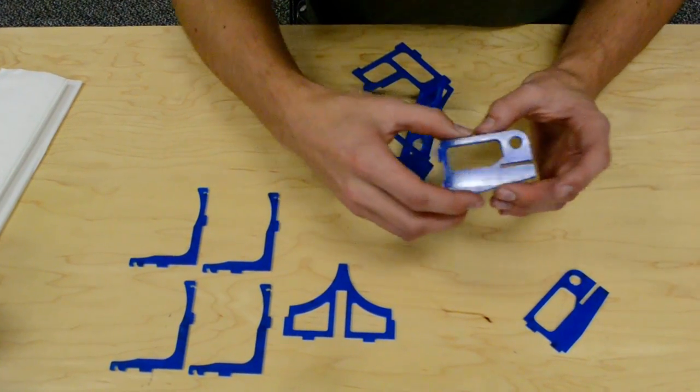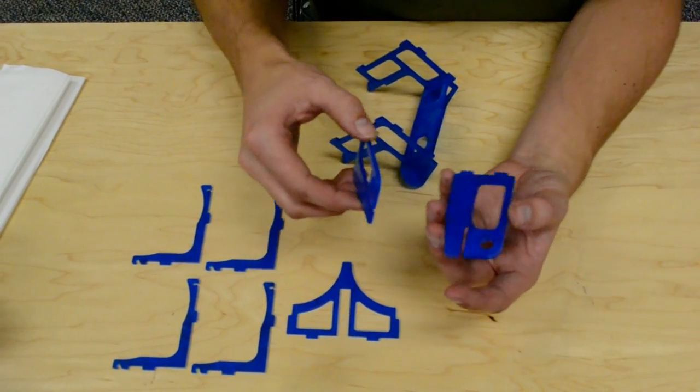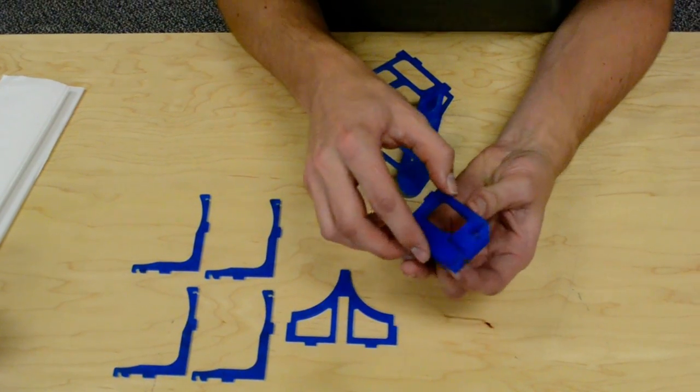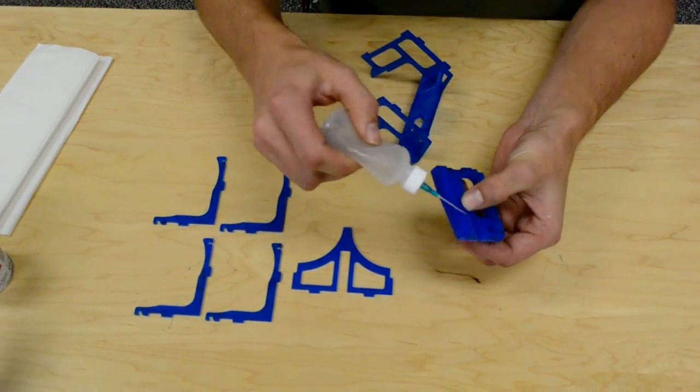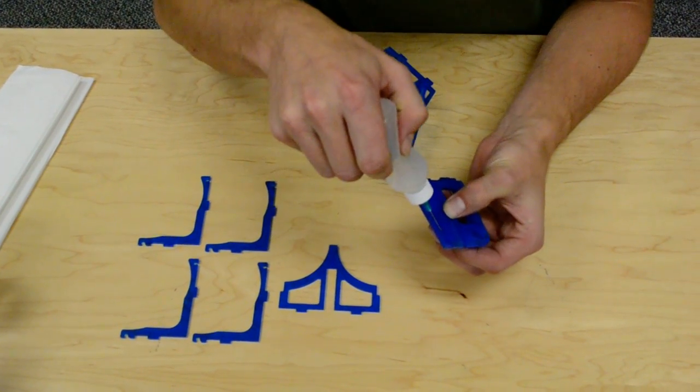This is probably still reacting a little bit, but it's solid enough that I can add the third piece now. Squeeze first, apply glue here.